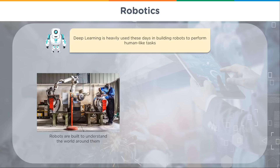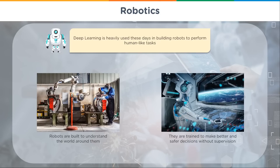Going back 20 years, robots couldn't tell the difference between a Coke can and a pencil because they're both cylinders — they just had no way to do that. Neural networks really started taking off in the mid-90s. Robots are now trained to make better and safer decisions without supervision. In outer space, for example, a robot isn't affected by loss of air pressure, doesn't get tired, and can be sent into dangerous environments like nuclear reactors — as in Japan after the tsunami — instead of risking human lives.